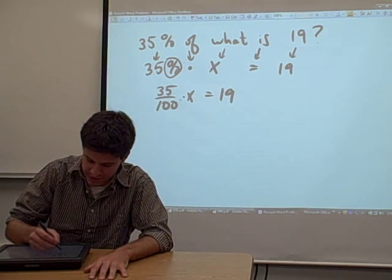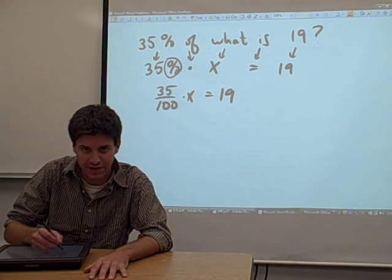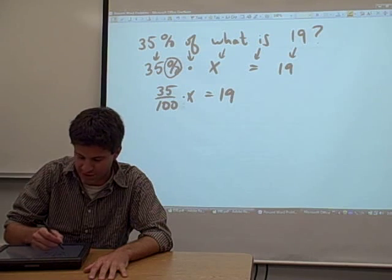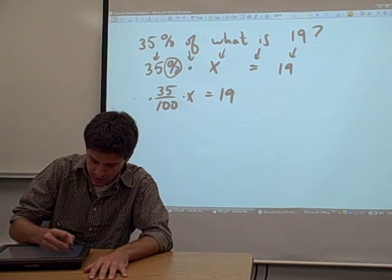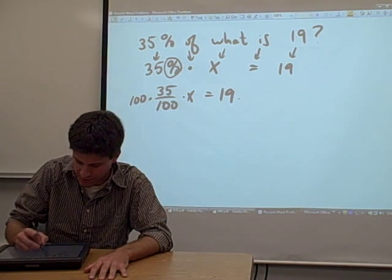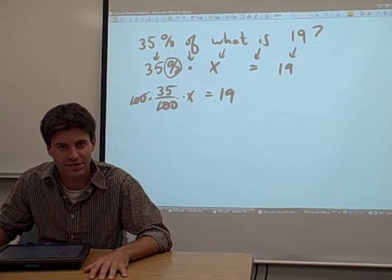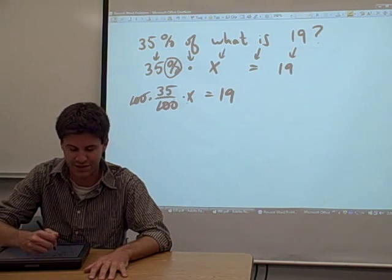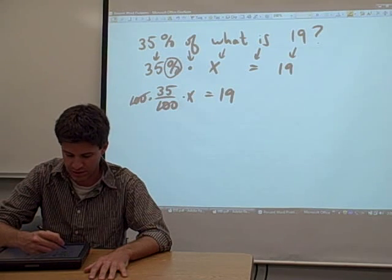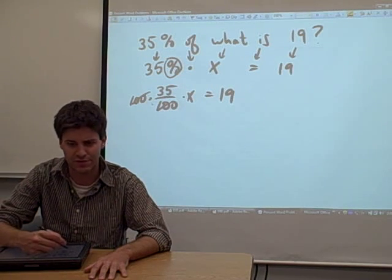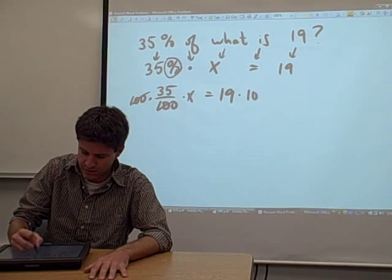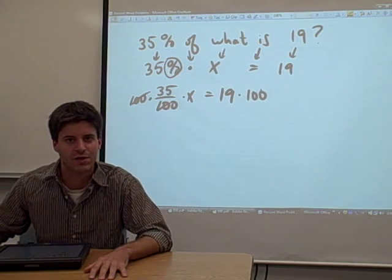So how do we solve for x? Well, there's this 100 that's dividing this left-hand side, so we need to get rid of it. The way we get rid of it is by multiplying by 100. That cancels out the hundreds, leaving the x side of the equation a little bit more simple. But we have to make this a legal operation.